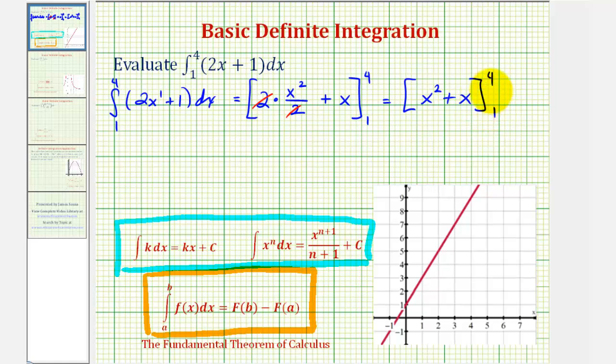And we'll first evaluate this at four, then evaluate it at one, and then find the difference. This is going to be equal to some quantity minus another quantity.